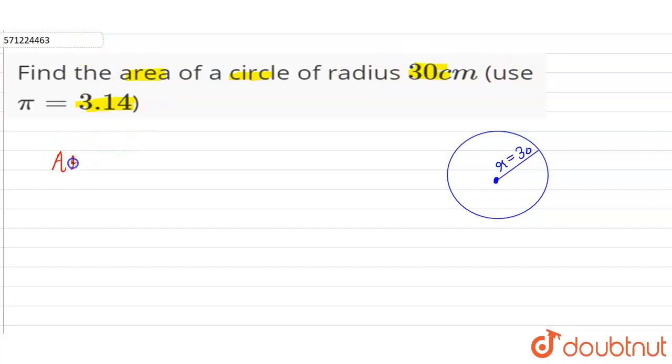The formula for calculating the area of circle is area of circle equals πr², πr². In this circle it is given that radius is 30 centimeters and we have to use π as 3.14.